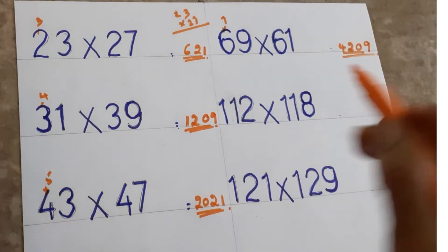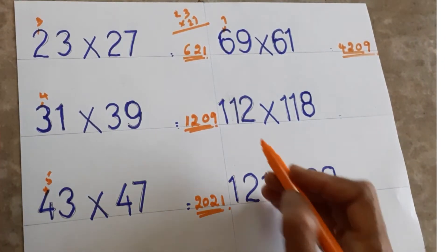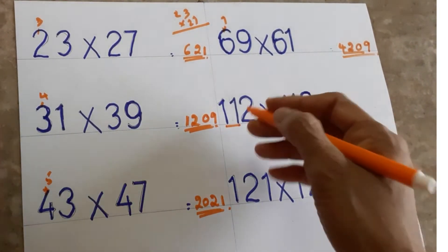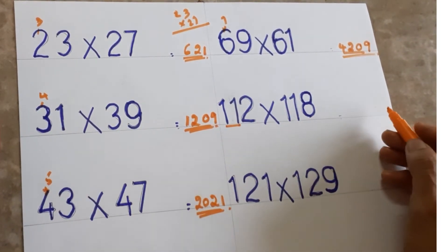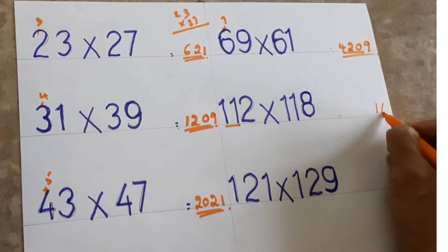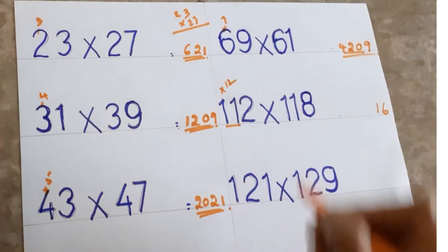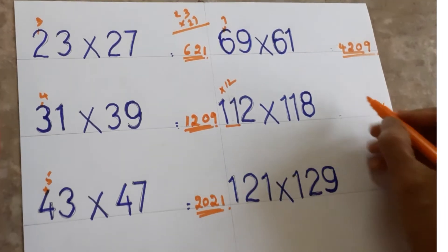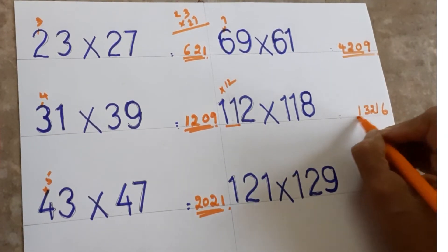If it is a three-digit number, take two digits at a time. For 113×112: units place — three and two. Three twos are six, write 06. Then 11 — after 11 the next number is 12. Eleven twelves are 132. So the answer is 13206.